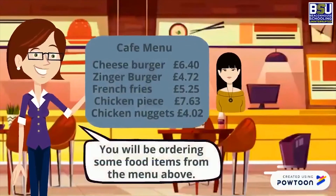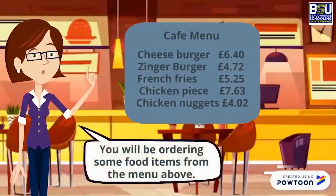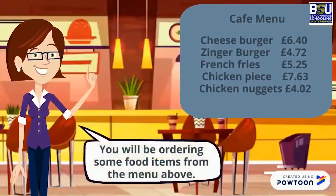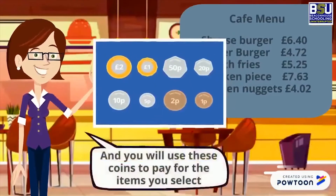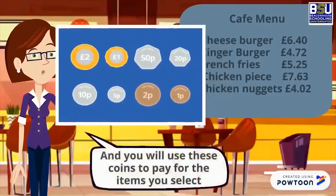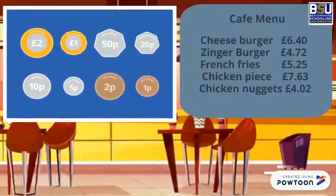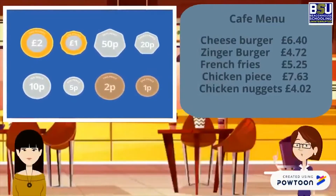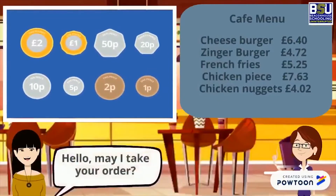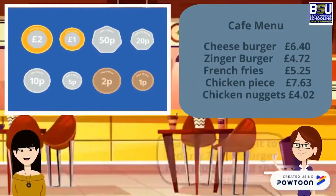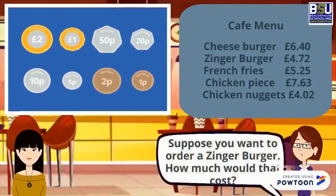You will be ordering some food items from the menu above and you will use these squares to pay for the items you select. Hello, may I take your order? Suppose you want to order a zinger burger — how much would that cost?